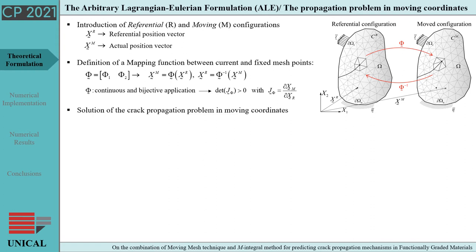The arbitrary Lagrangian-Eulerian formulation is based on the definition of two coordinate systems, known as the referential and moving coordinate systems. The referential system identifies the computational nodes in their initial position, while the moving system provides the position of the node points during the moving process. A proper mapping function links the systems and allows defining the gradient operator of the transformation, which is needed to express governing equations in the moving configuration. The crack propagation problem is then solved with reference to the moving configuration.